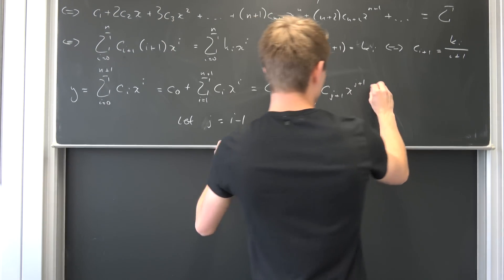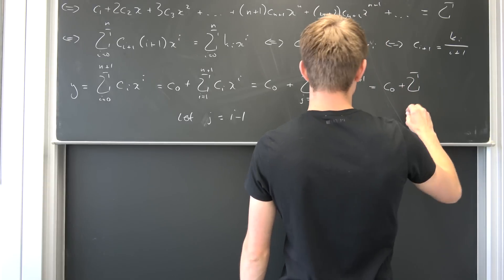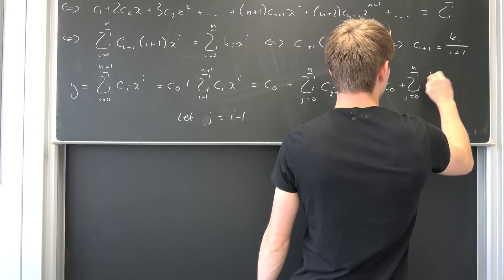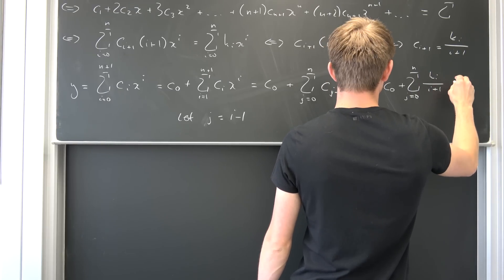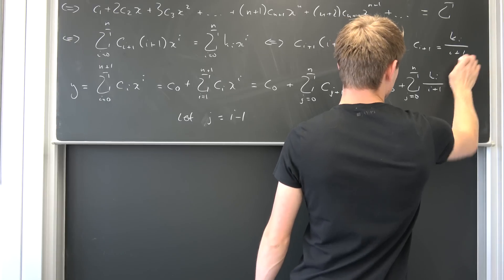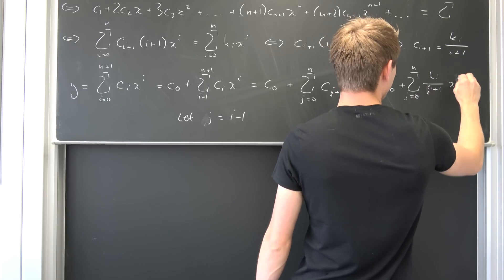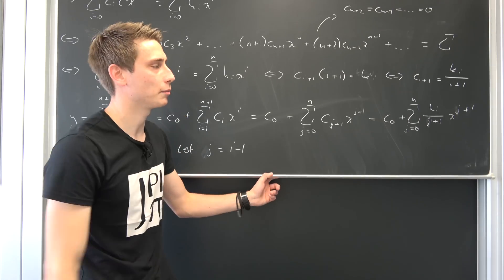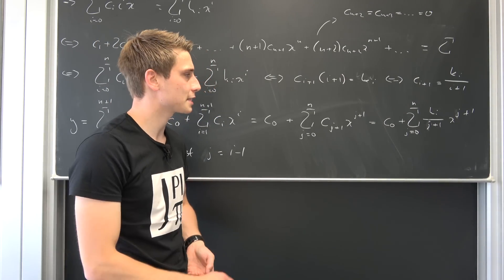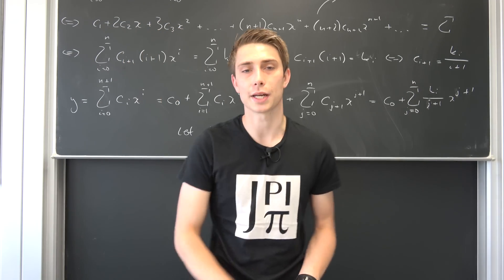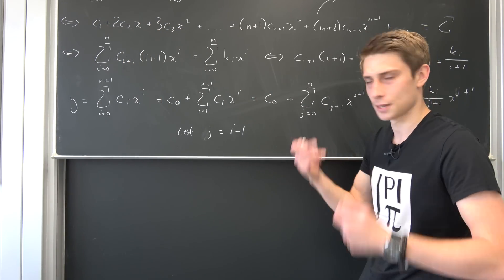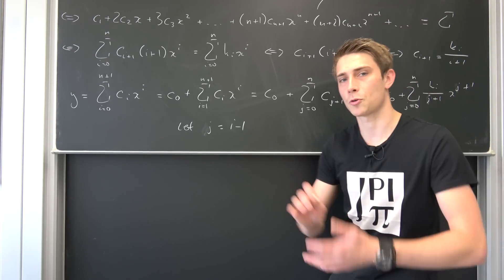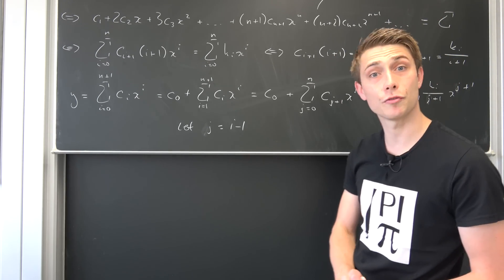Now we have a definition for c_{j+1}: it equals k_i over (i+1), or equivalently k_j over (j+1). We can plug this in, ending up with c_0 plus the finite sum from j equals 0 to n of (k_j over (j+1)) times x to the j+1. And then we are done with this technique. I think that's quite nice, honestly — it took some thinking. I hope this recording was okay, and now for the third method.